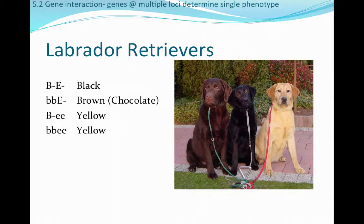A black lab has the genotype big B at the first locus and big E at the second locus — it doesn't matter what the second allele is at each locus. As long as there is a big B and a big E, those individuals will be black. Big B is the dominant allele at the first locus informing black color, and big E allows that black color to be deposited into the hair follicle.